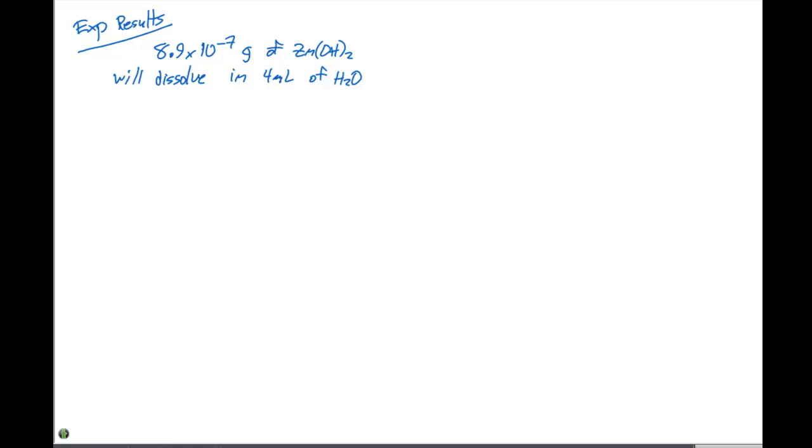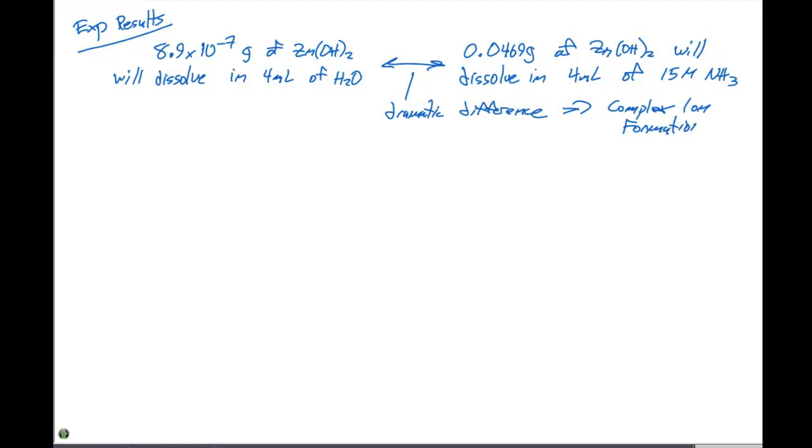But if we compare that to the result that we just calculated, we can say that 0.0469 grams of zinc hydroxide will dissolve in 4 milliliters of 15 molar NH3. What I want to point out here is that these two values are a dramatic difference. This dramatic difference can be attributed to complex ion formation. This shows us that we can really manipulate and control the solubility by using this complex ion formation and using it to our advantage.